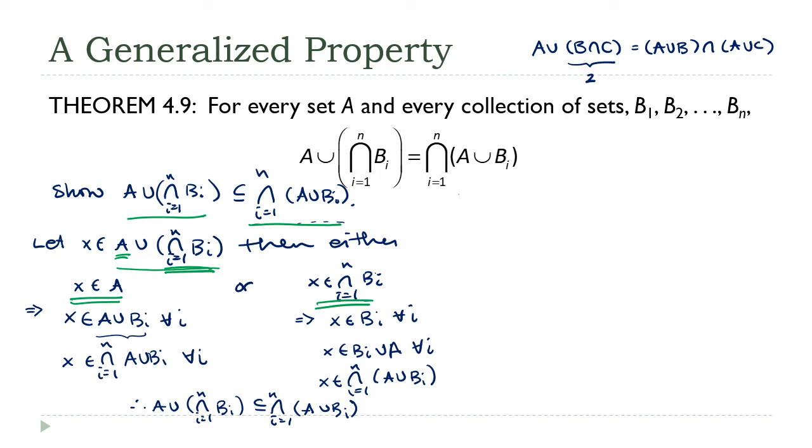Now let's do the other way. I need to show that the intersection of the unions is a subset of A union the intersections. We're going to do a very similar approach. First, let X be an element of the intersection of the unions.